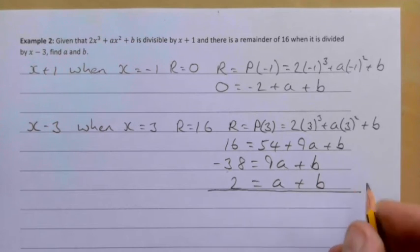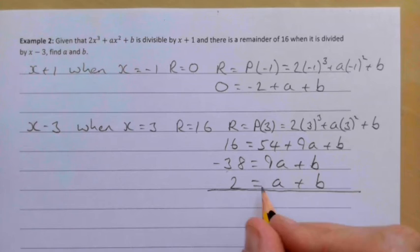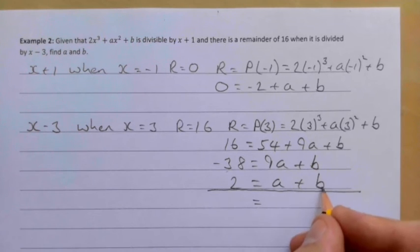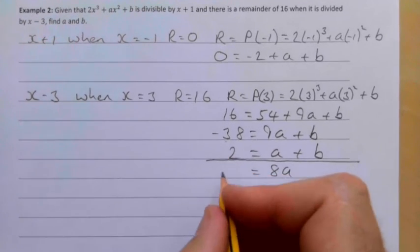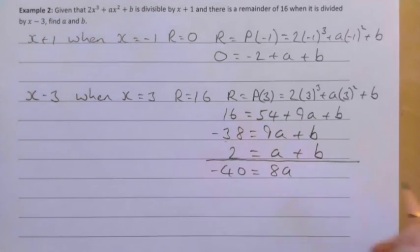Since the b's are already the same, I'll subtract these equations. The b disappears, giving 8a = -40, since -38 - 2 = -40.